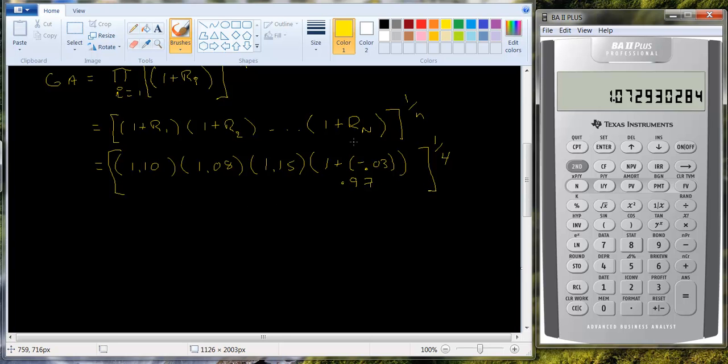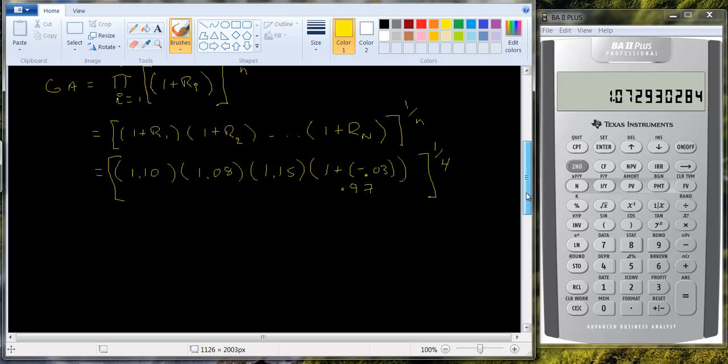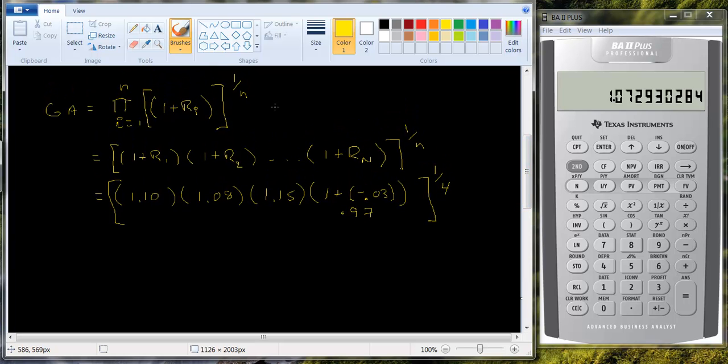Actually, I should have given you the formula as this minus 1. Remember, we added 1 to it, so we need to subtract that 1 back out. So let me just adjust my formula. So I'm going to get 1.0729,